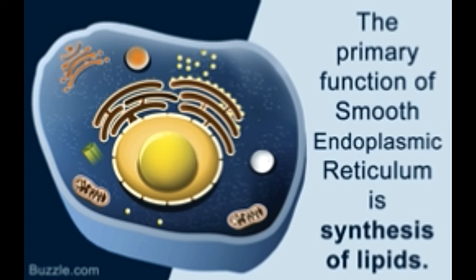The endoplasmic reticulum, ER, is an extensive system of interconnected tubules and cisternae — flattened sac-like structures that can be found in almost all eukaryotic cells, except the red blood cells of mammals.